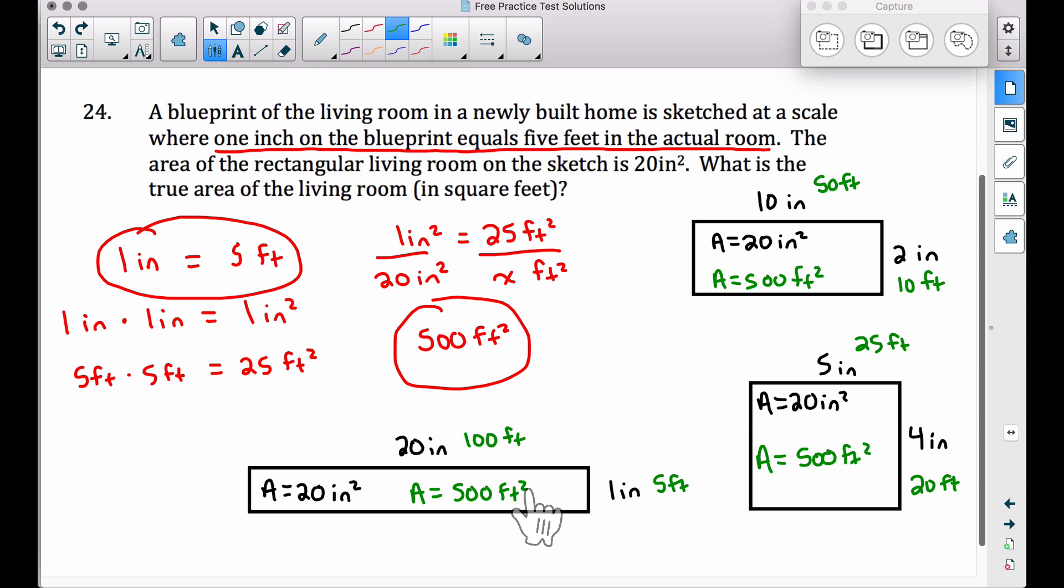So my point is, up here this may be a little bit harder to understand how I went from inches and feet to square inches and square feet. Essentially all I did was square each number. 1 inch times 1 inch is 1 square inch. 5 feet times 5 feet is 25 square feet. Therefore, our area conversion is 1 square inch on the blueprint is 25 square feet in real life. Then we solve that proportion.